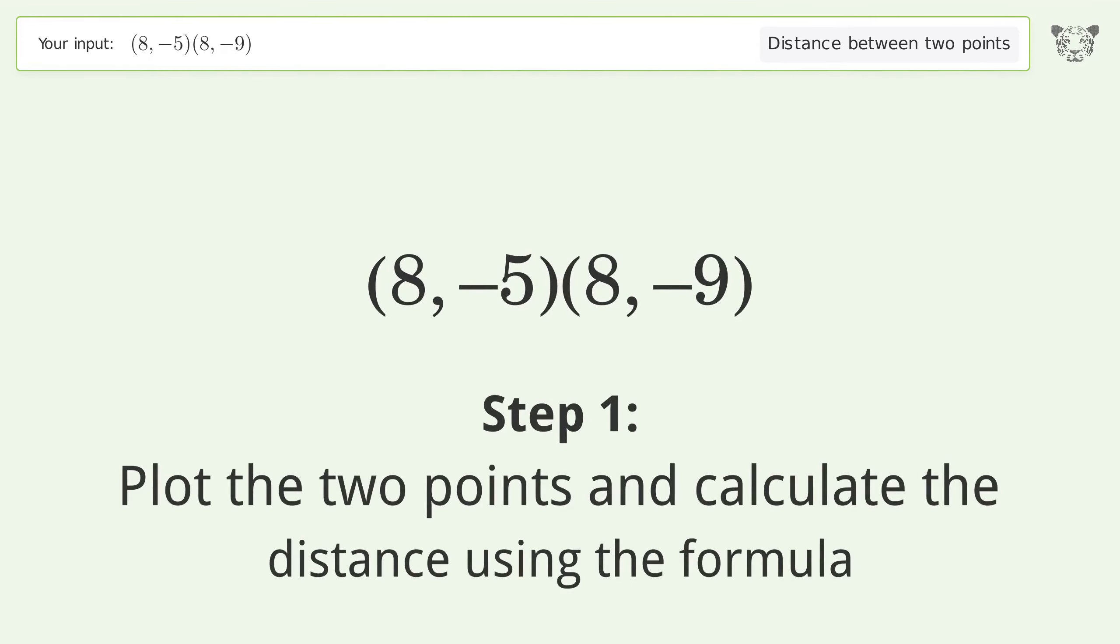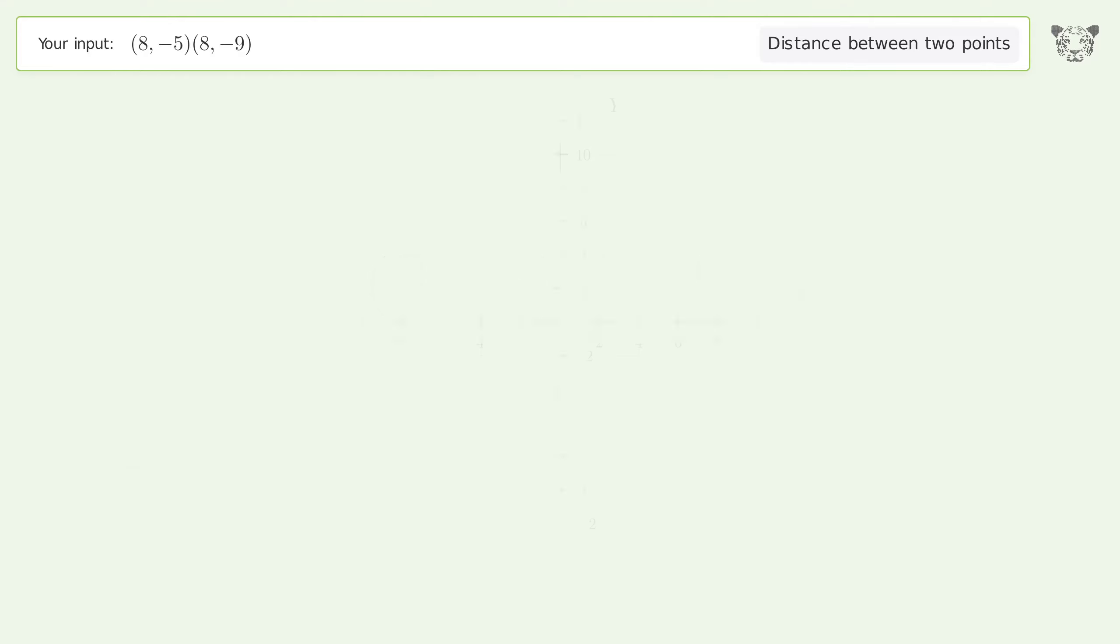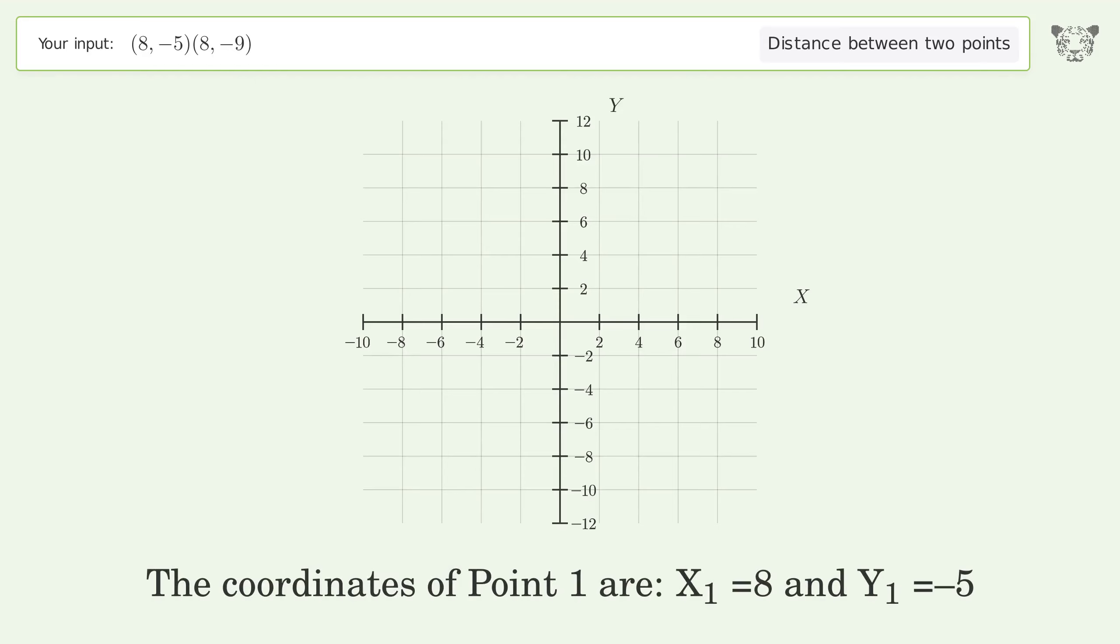Plot the two points and calculate the distance using the formula. The coordinates of point 1 are x1 equals 8 and y1 equals negative 5. The coordinates of point 2 are x2 equals 8 and y2 equals negative 9.